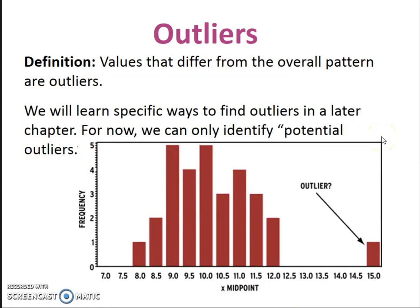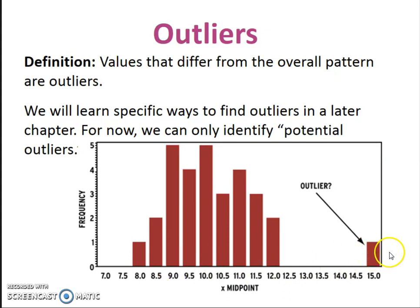Outliers is our last component of SOCS. Outliers are any values that differ from the overall pattern. We will learn specific ways to identify outliers later on. For right now, we can only identify things that might be potential outliers — like this one value that kind of differs from the rest of the pack. That might be a potential outlier.